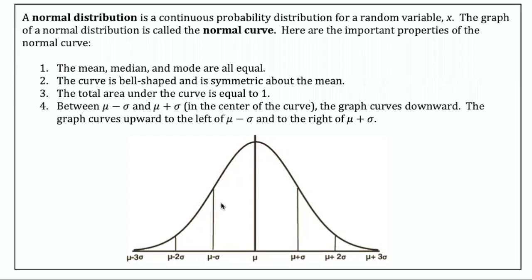So a normal distribution is just a continuous probability distribution. So heights, for instance, you can be 6'2", 6'3". So that variable is continuous. And we call this curve the normal curve. You'll also sometimes hear it called the bell curve, because it looks like a bell.